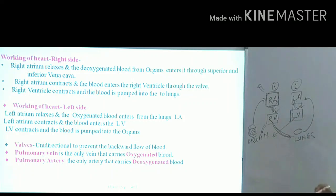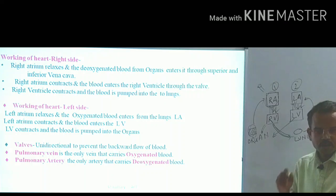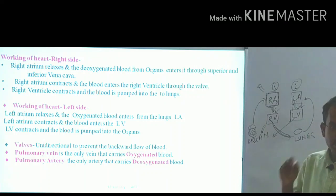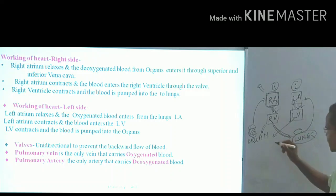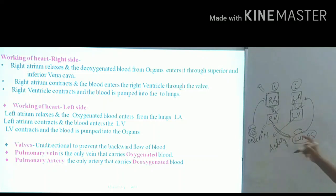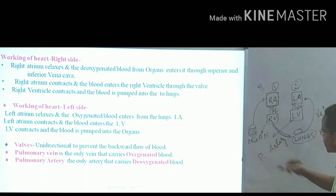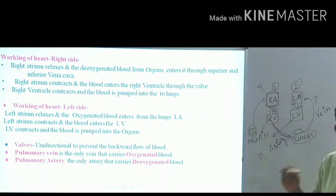Anything related to lungs is called pulmonary — related to the heart is cardiac, related to the kidney is renal. Blood going away from the heart towards the lungs is carried by an artery; blood coming towards the heart from the lungs is carried by a vein. Since we are talking about the lungs, these are the pulmonary artery and pulmonary vein.